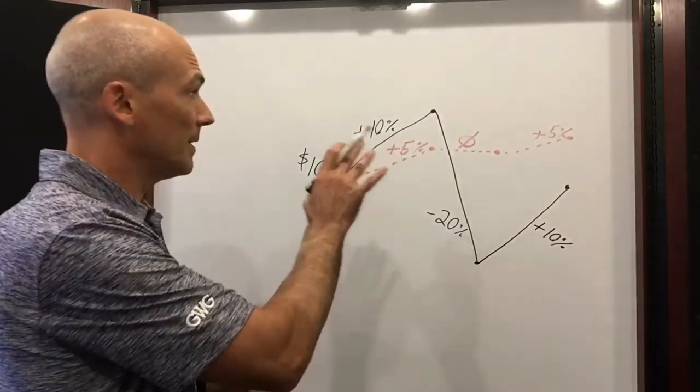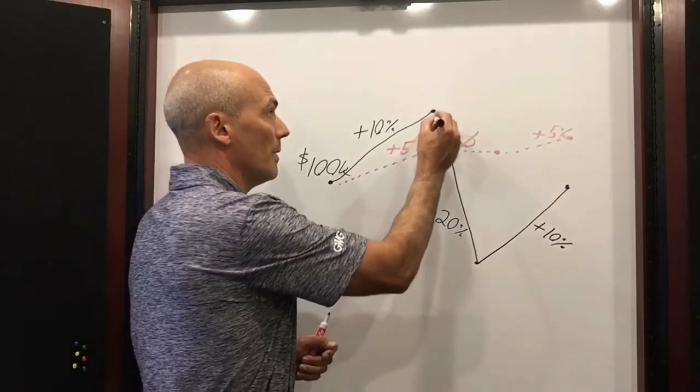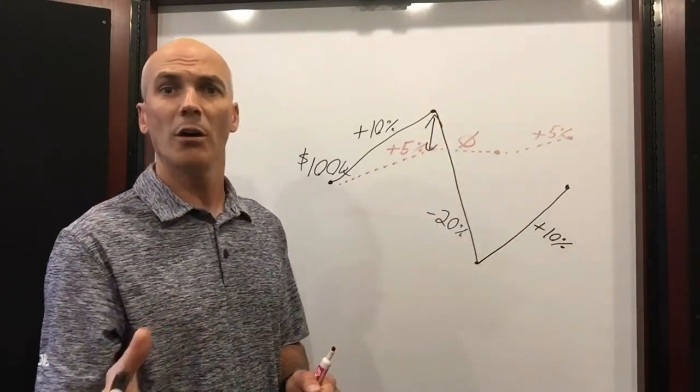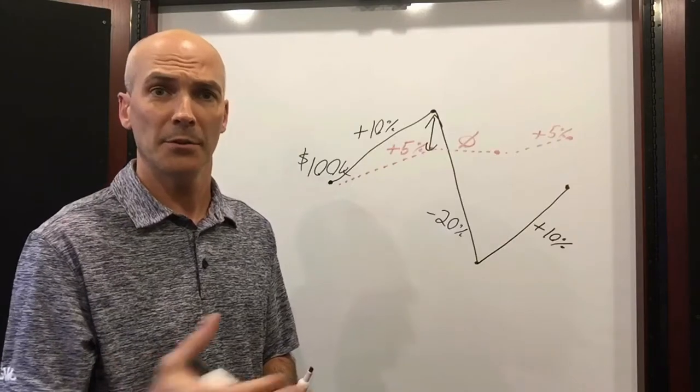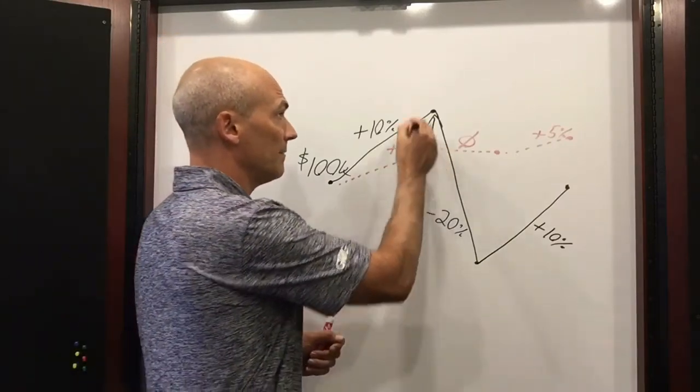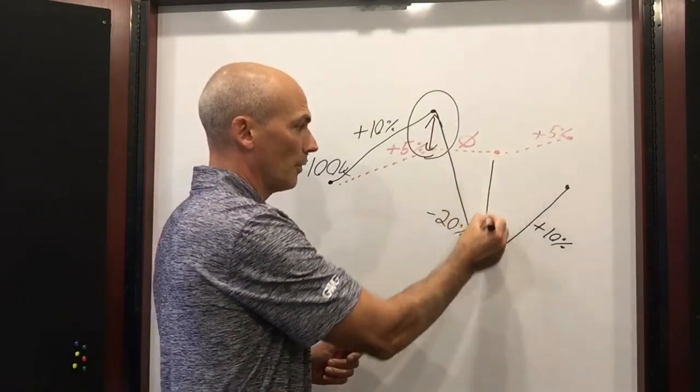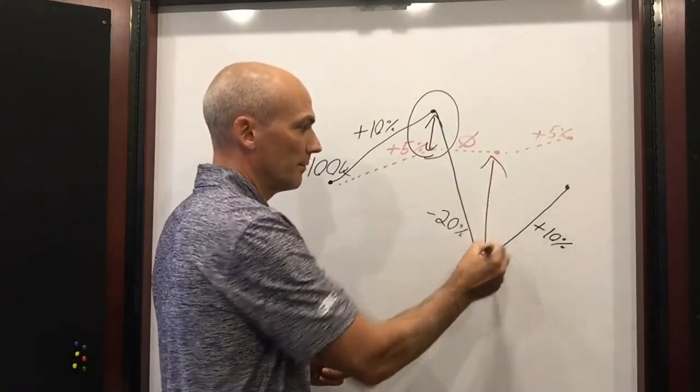How do these companies make money? Well remember, you're giving up some of the upside. You're not getting all of the returns of the S&P 500 in this example. So you're giving up some of the upside in exchange for protection from the downside.